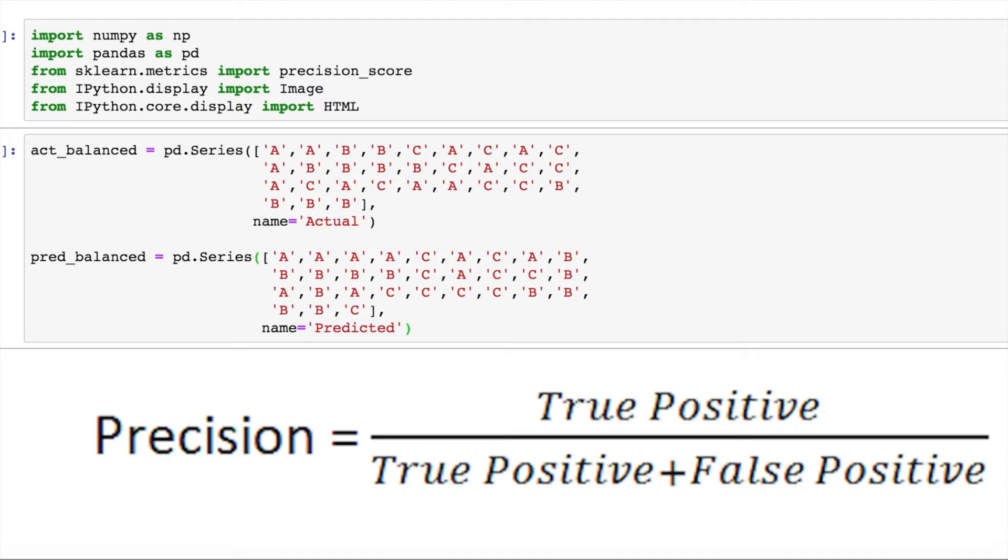The distribution of each of the three classes are equal, that is actual contains 10 samples of A, B and C respectively.